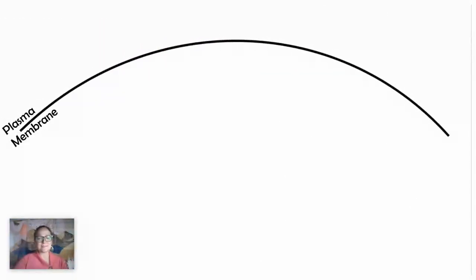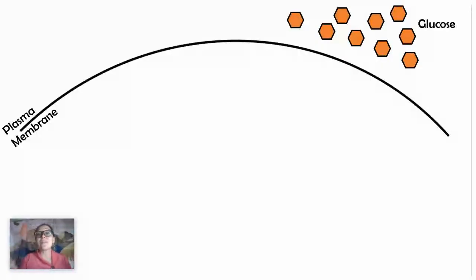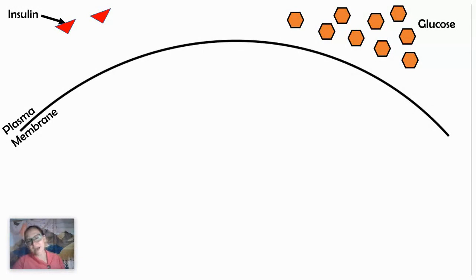Now let's look at another example. What happens after dinner — say you had pasta and ice cream — and your blood sugar levels are really high? Instead of an external environment stimulus like epinephrine, now we're looking at a change in internal environment: heightened blood sugar. How do we lower it to maintain homeostasis? One of the things that will happen is our pancreas beta cells will produce insulin and send it into our bloodstream.